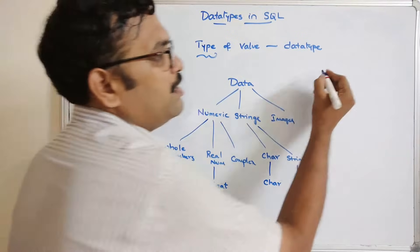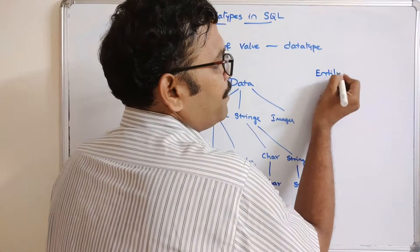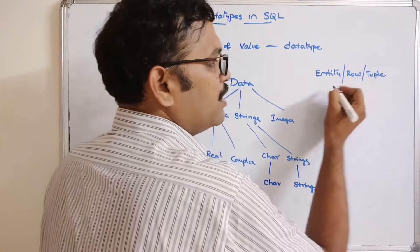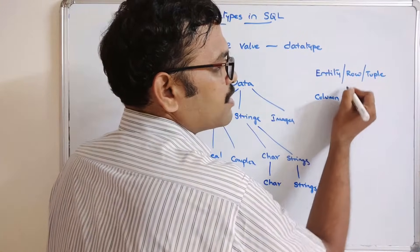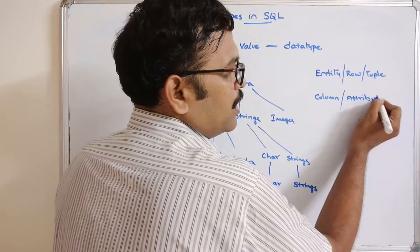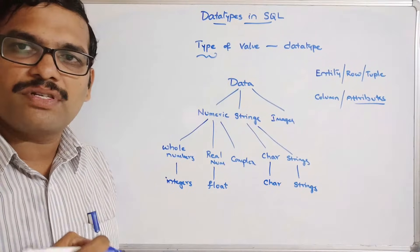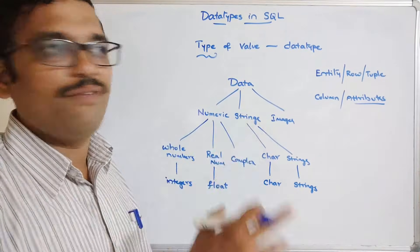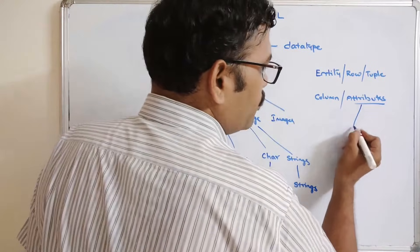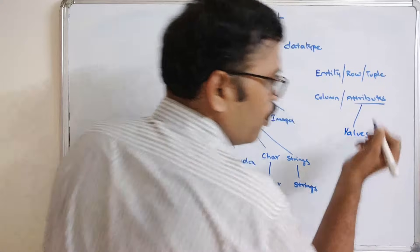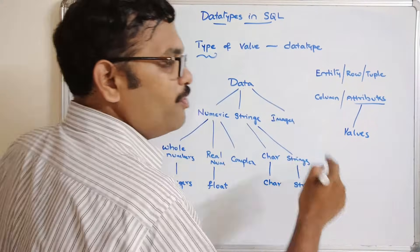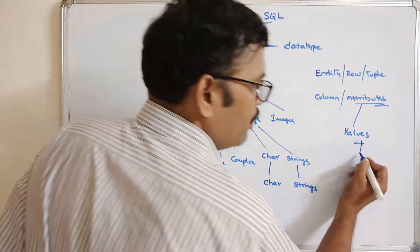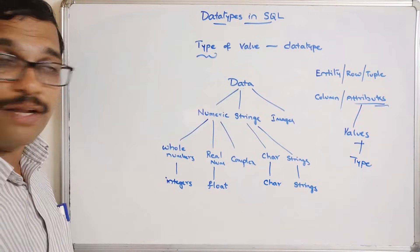We have seen the basic concepts of RDBMS — entities, which we can call rows or tuples, and columns, which are attributes. Attributes are the characteristics of any entity. These attributes hold some values, and we have to define those attributes with particular data types.